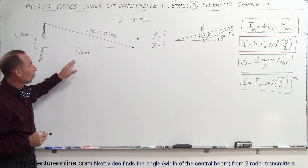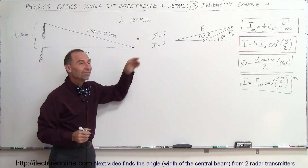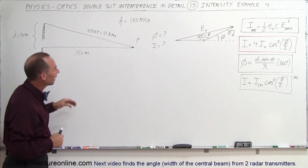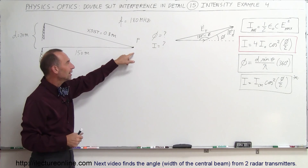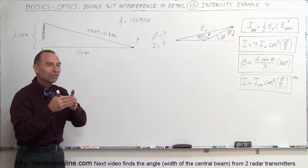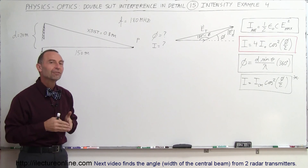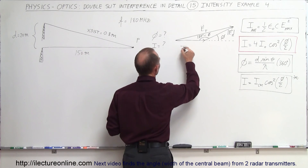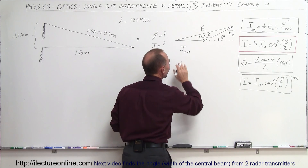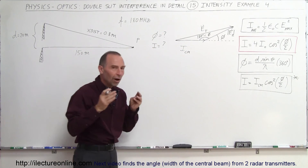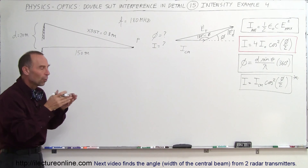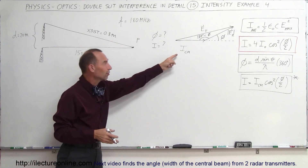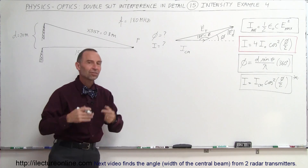Two questions: first, what will the phase angle difference be when the two waves come together? And secondly, what will the intensity be relative to the intensity if they were perfectly in phase — that is, relative to I central max, which is the intensity of the maximum beam when the two path lengths are exactly the same.